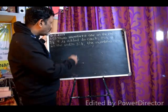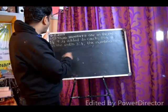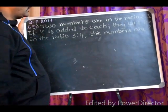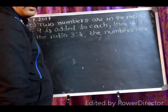The problem is two numbers are in the ratio of 2 is to 3. If 9 is added to each, they will be in the ratio of 3 is to 4. Then we have to find those numbers.